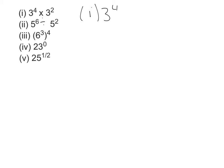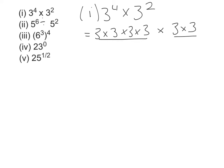So 3 to the power of 4 multiplied by 3 to the power of 2. What this actually means is we have 3 times 3 times 3 times 3 — that's 3 to the power of 4 — and we're multiplying that by 3 times 3, which is 3 to the power of 2. That gives us six 3s in total, so the answer is 3 to the power of 6. The quick method is to just add the 4 and the 2 together, which gives us 6.